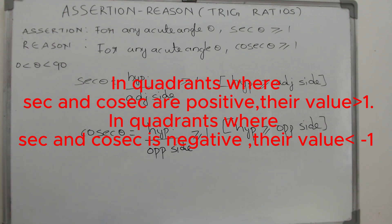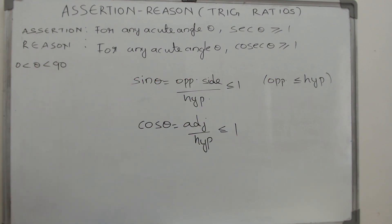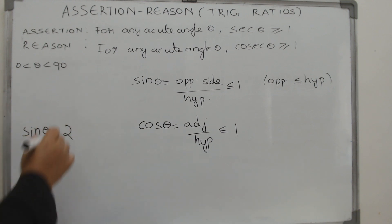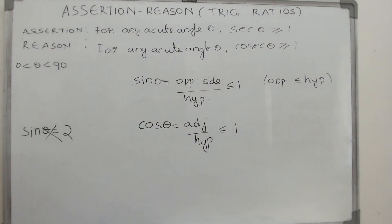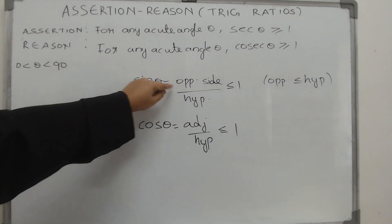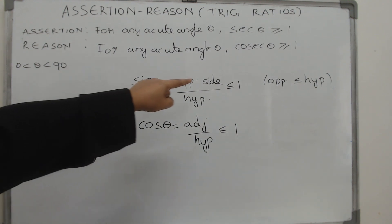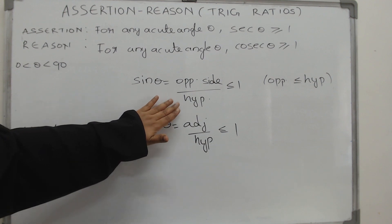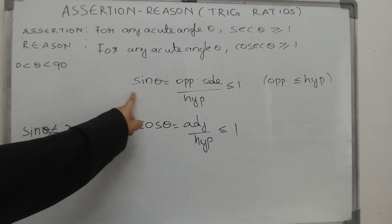Remember, this applies to secant and cosecant. The situation reverses for sine and cosine: for any acute angle, sine theta and cosine theta are always less than or equal to one. You cannot have an angle whose sine is two or three or even 1.5, because sine theta equals opposite over hypotenuse — the numerator is less than the denominator, making it a proper fraction, always less than or equal to one. Again, the reason is that the hypotenuse is the greatest side.